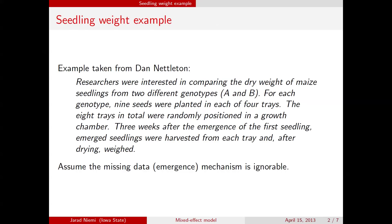This example is taken from a colleague, Dan Nettleton. The idea here is that you have corn — that's maize — and you have two different genotypes, genotypes A and B. For each of the genotypes, you're going to plant nine seeds into each of four trays. So you have four trays for each genotype, nine seeds in each tray, eight trays total, placed in a growth chamber and randomly positioned. We wait three weeks after the first seedling has emerged, then harvest all the seedlings from all the trays and weigh them.